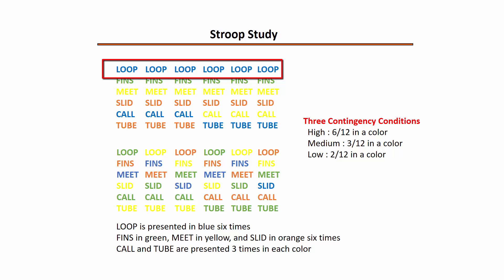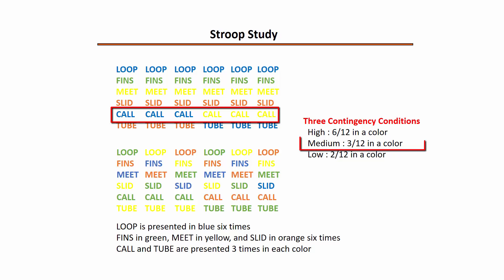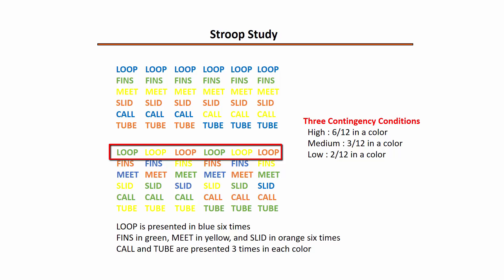For the first block, 'Loop' was presented in the color blue six times — this represents the high contingency condition. Also in this first block, 'Call' was presented in yellow three times — this is the medium contingency condition. In the second block, 'Loop' was presented twice in three different colors, and this is the low contingency condition.